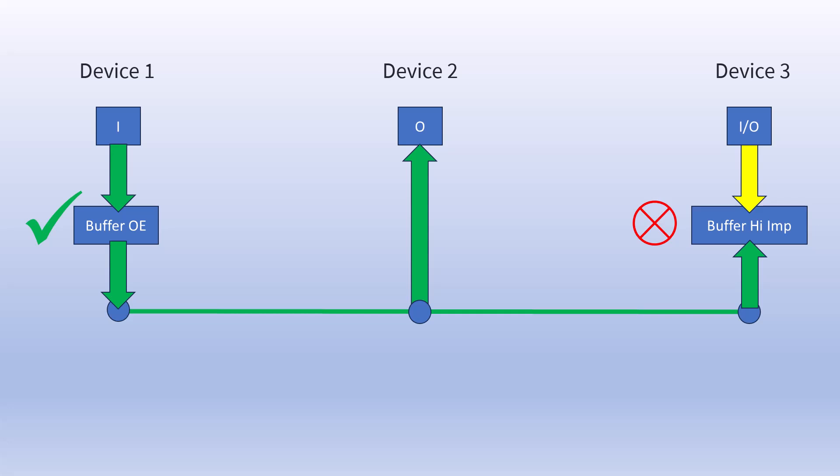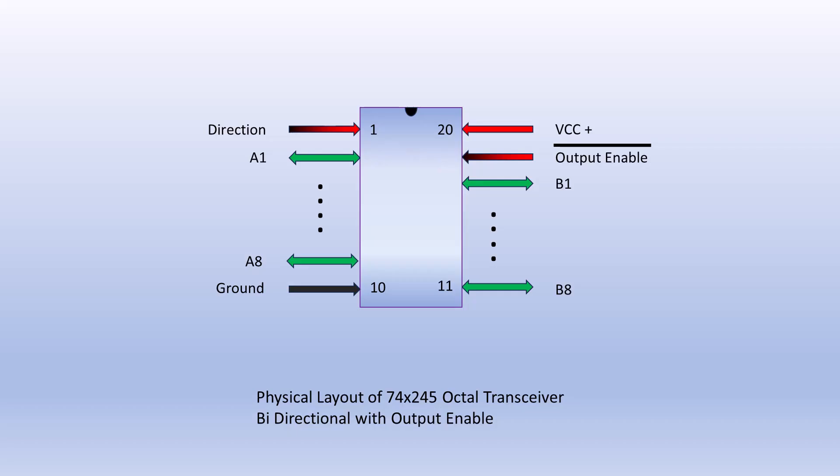Let's talk about the specific device, a 74-245 bus transceiver. First notice that this specific device supports eight bi-directional data lines. Depending on how the direction pin is set, data can flow from the A pins to the B pins and vice versa. Or if output is not enabled, the output pins go into a high impedance state and thus will not pass any data.